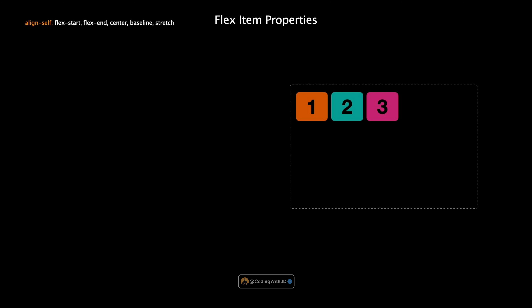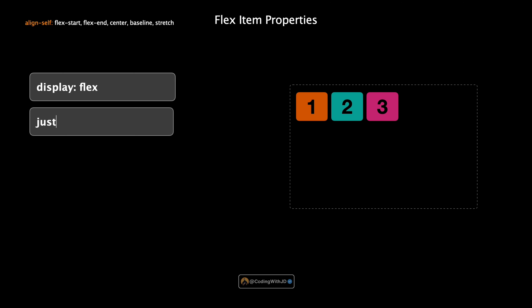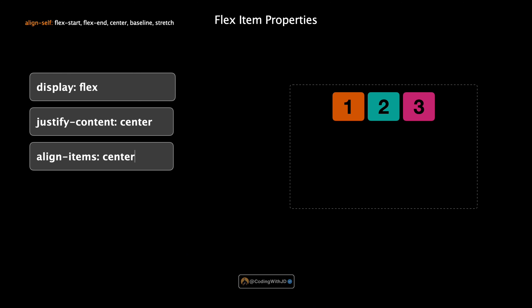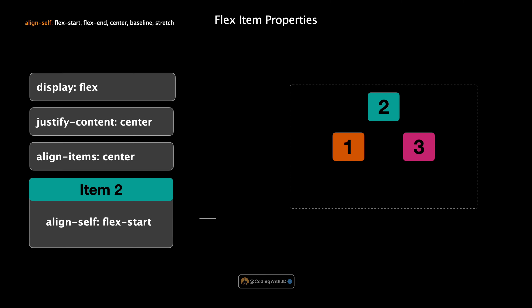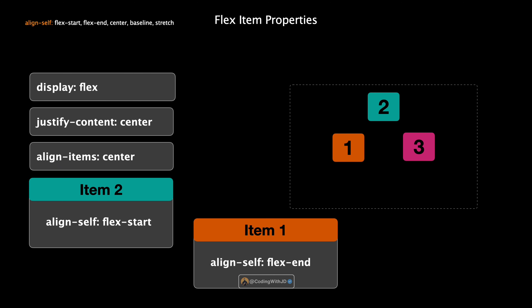Next is align-self, a flexbox property that allows individual control over how each item is aligned along the cross axis, overriding the container's align-items setting. Currently all three items are centered along both axes due to the container's justify-content and align-items settings. By setting align-self to flex-start on the second item, it moves to the start of the cross axis — the top of the container — breaking free from the default center alignment. Setting align-self to flex-end on the first item moves it to the bottom of the container, placing it at the opposite end from the second item.